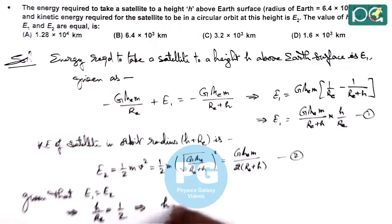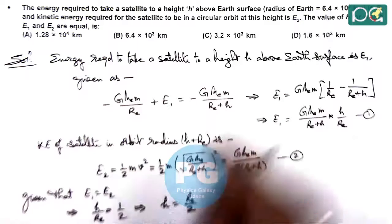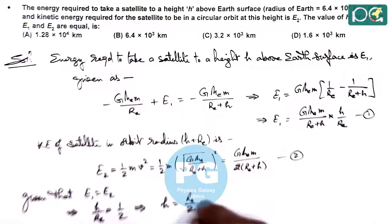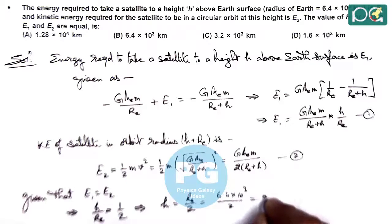This implies the value of H equals Re by 2, and radius of Earth is given to us as 6.4×10³ divided by 2, so this is 3.2×10³ meter.